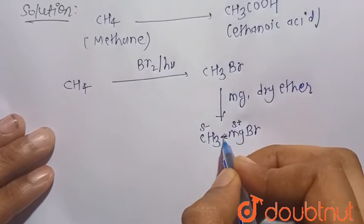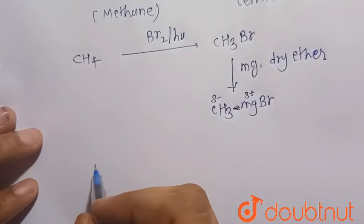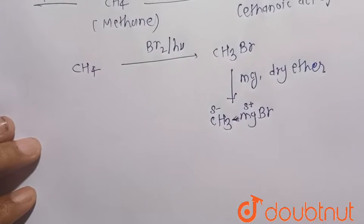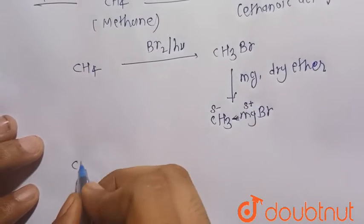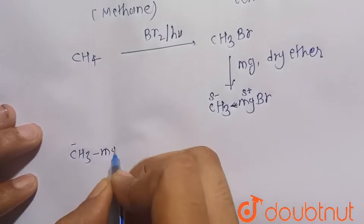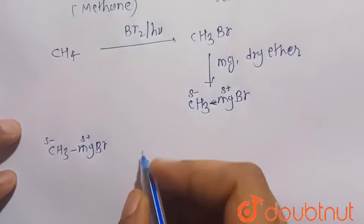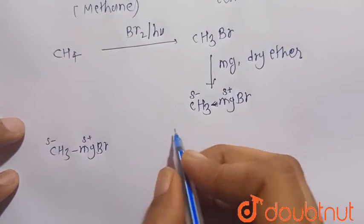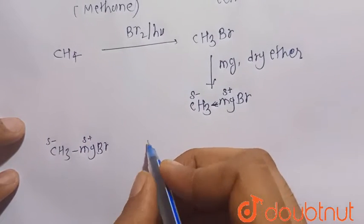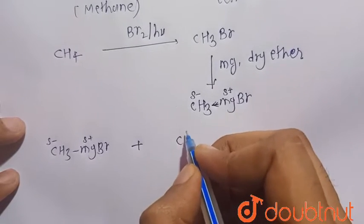So now we have to prepare ethanoic acid. So from Grignard reagent, we know that when Grignard reagent, that is CH3-MgBr, that is delta negative, this is delta positive, it reacts with the CO2. That is, we can write CO2 in this way, C double bond O, C double bond O.